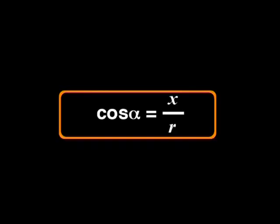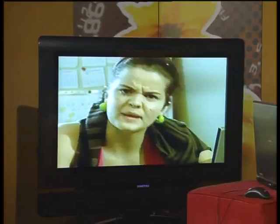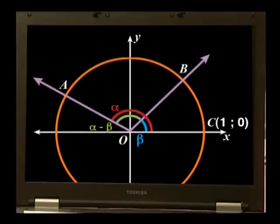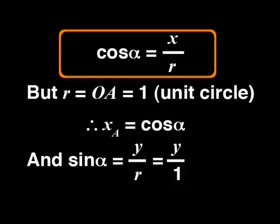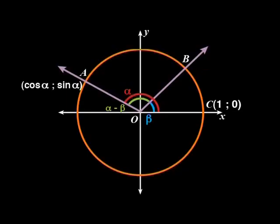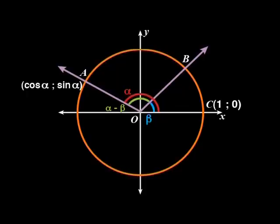Can we write the coordinates of A in terms of the trig ratios of alpha? The cosine of alpha is X over R. It helps to remember that we are working in a unit circle, so R is 1. So the X coordinate of A is just cos alpha. The Y coordinate will have something to do with sine alpha. Sine alpha is Y over R, and since R is 1, the Y coordinate of point A is sine alpha. So I can write the coordinates of A as (cos alpha, sine alpha). Now what about the coordinates of B? The X value will be cos beta and the Y value is sine beta.